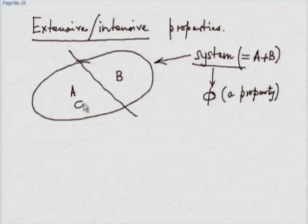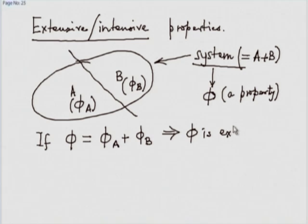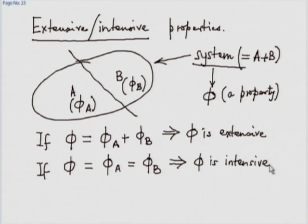For part A, we measure it and say it is phi A. For part B, we measure it and let us say phi B. Now, if we find that the property of the whole system phi turns out to be phi A plus phi B, then we say phi is extensive. If phi turns out to be equal to phi A and also equal to phi B, then we say that phi is intensive.